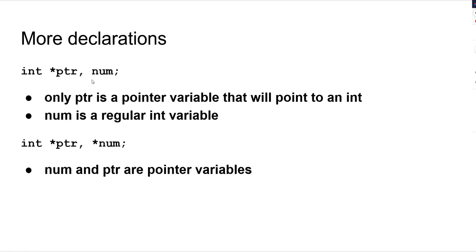Here are some more nuances of pointers. With int* ptr, num — num is just a regular variable. Notice there's no asterisk in front of it. If there's an asterisk, it's a pointer; otherwise it's a regular variable. So ptr is the only pointer here; num is a regular integer. If you put an asterisk before both of them, they are both pointer variables. Pay attention to these things.